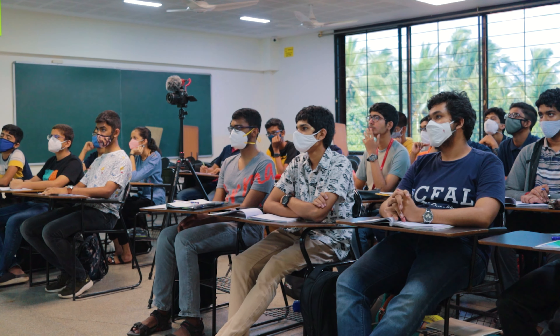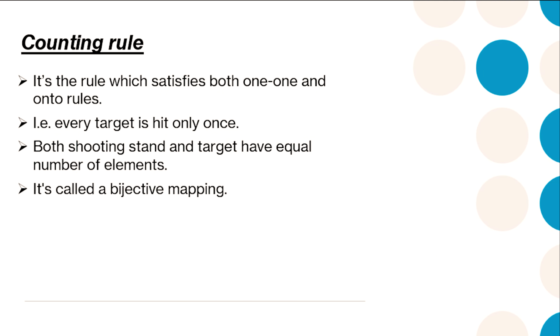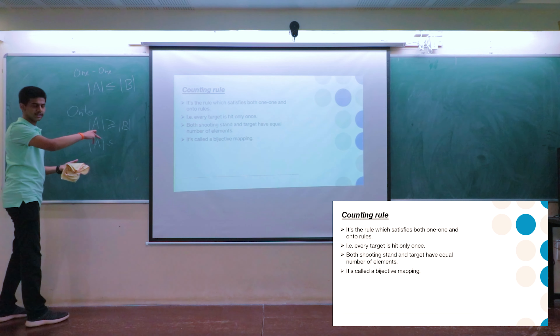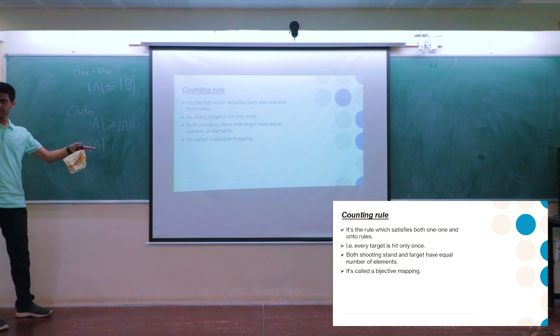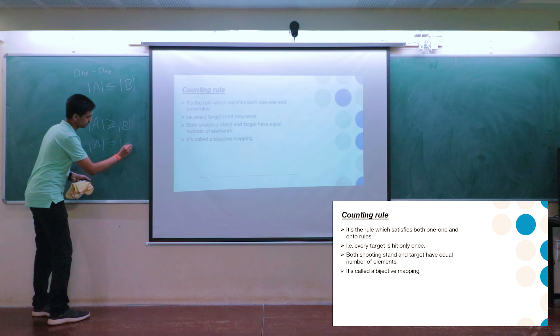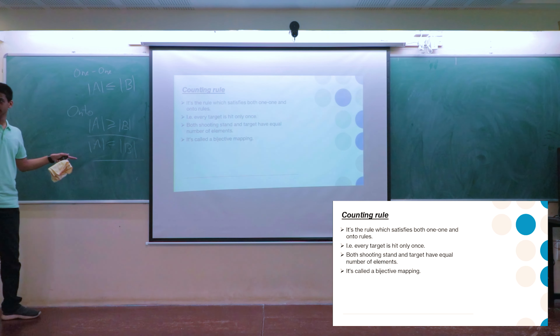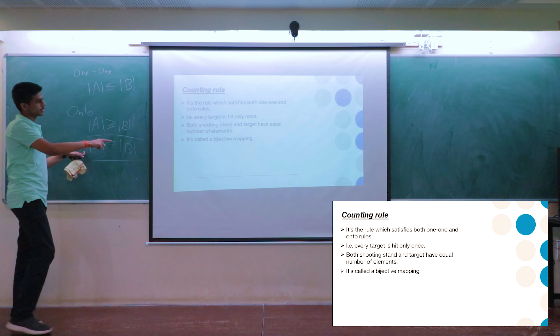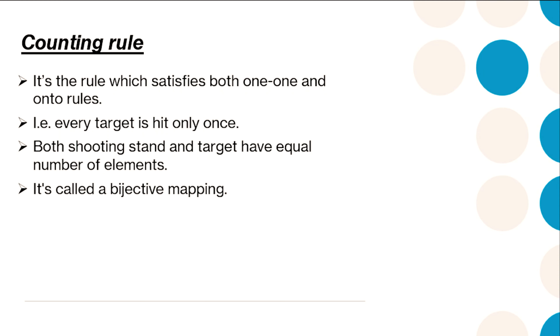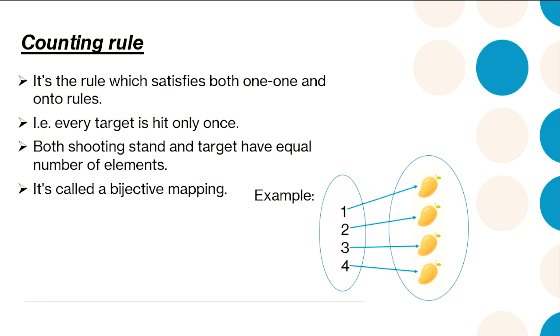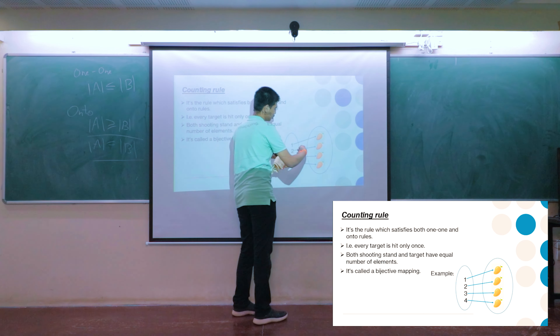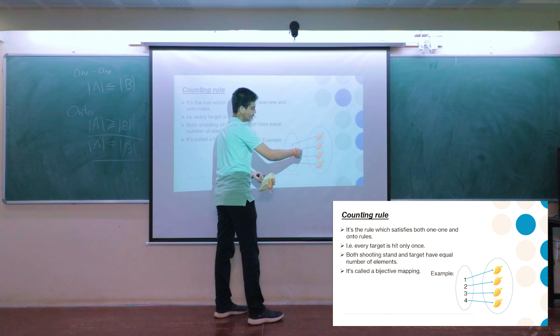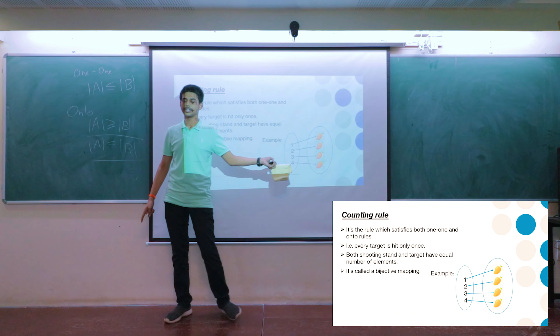The counting rule is a rule which satisfies both these rules — that is, cardinality of A is both less than or equal to and greater than or equal to cardinality of B, which means they are equal. Every target is hit exactly once, and both the shooting stand and target have the same number of elements. This is called bijective mapping. An example is how you count things: you take one apple and one mango, map them to one and two — you know there are four apples. This is bijective mapping.